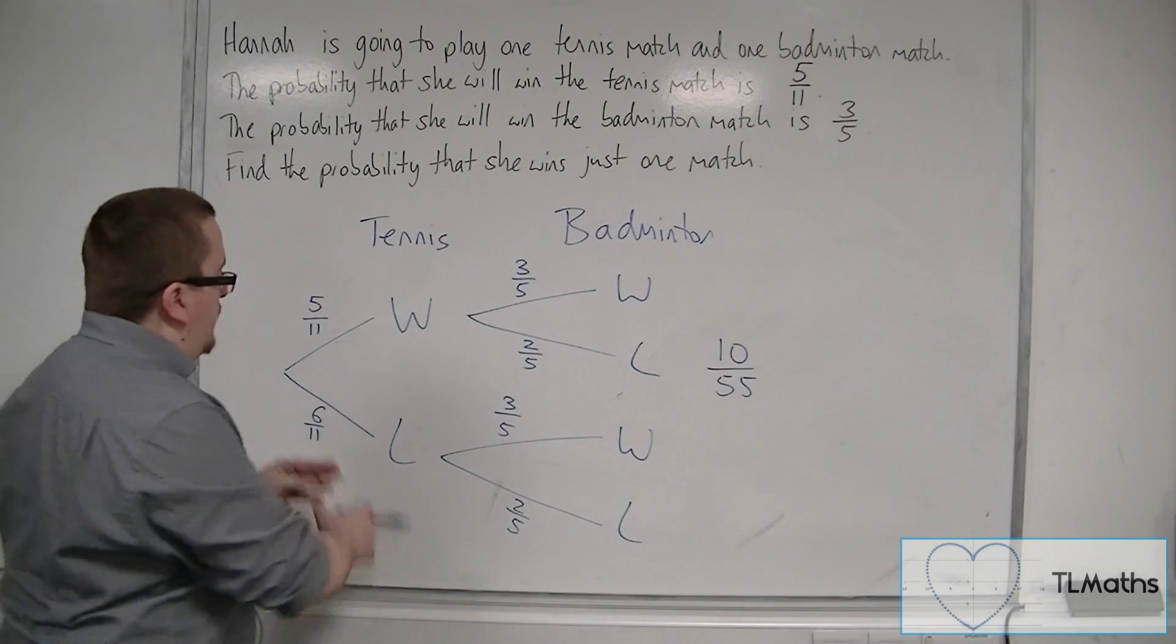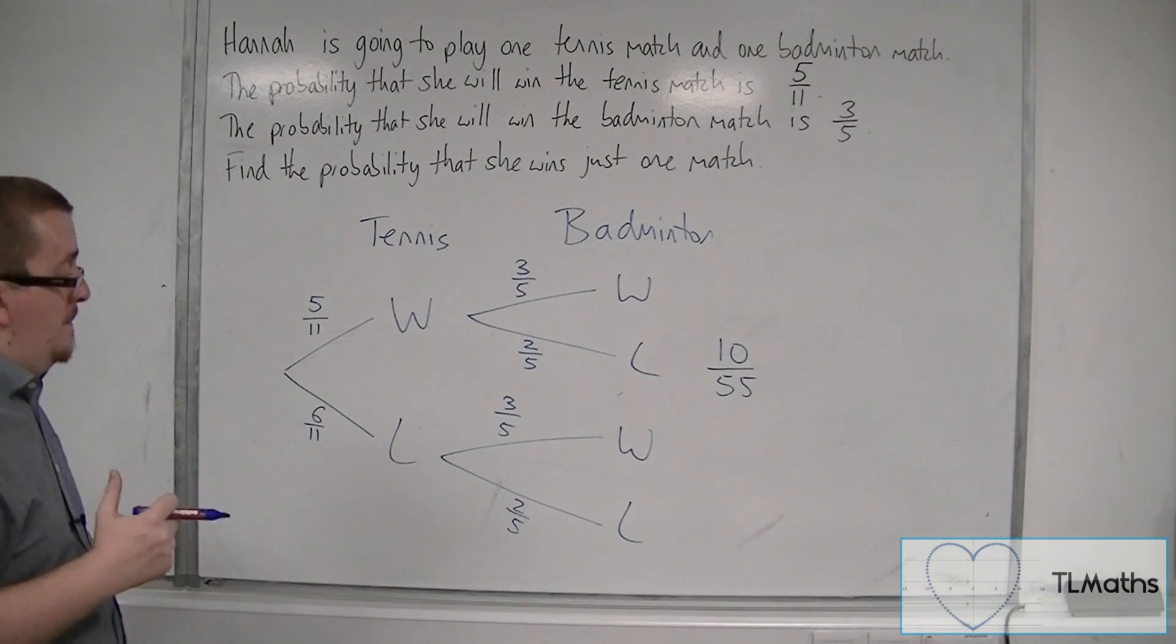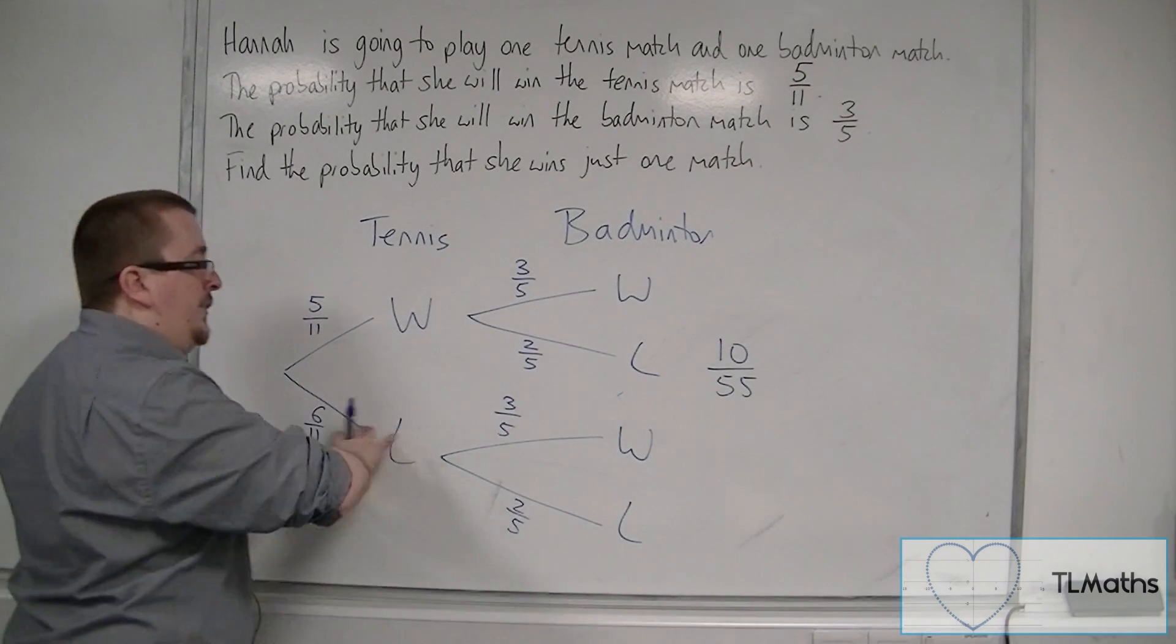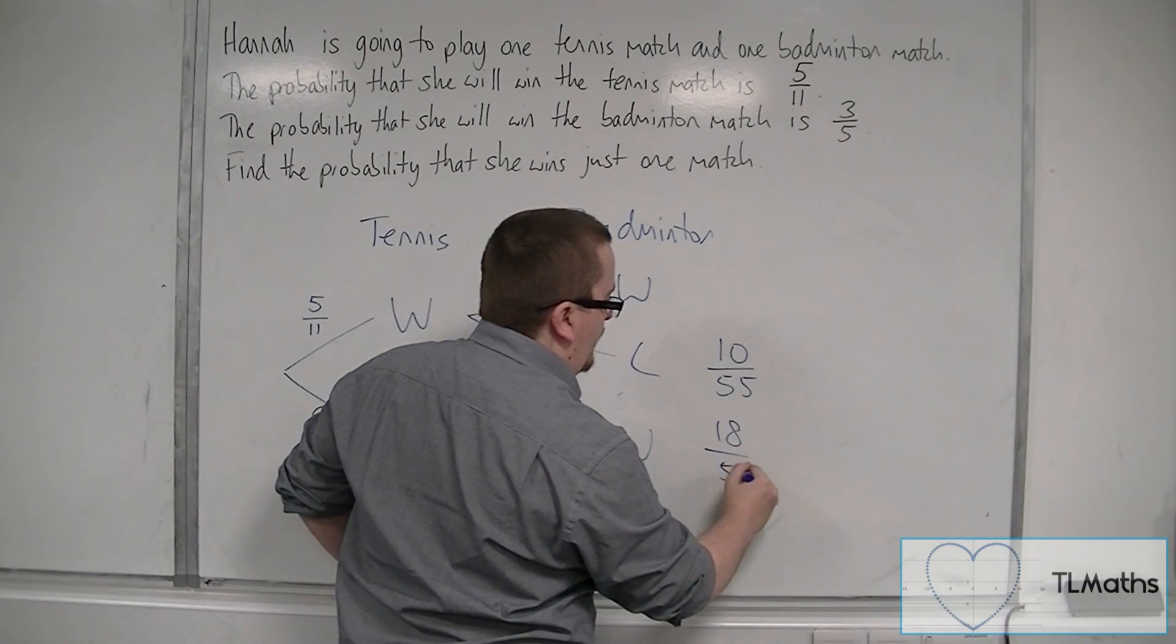Or she could have lost the tennis match and won the badminton match. We've got 6 elevenths times 3 fifths. 6 times 3, that's 18 over 55.